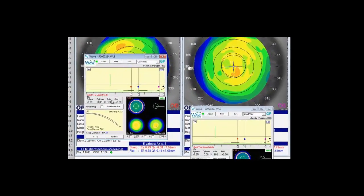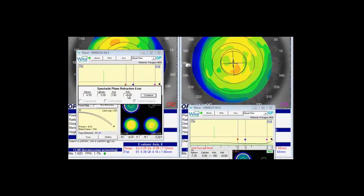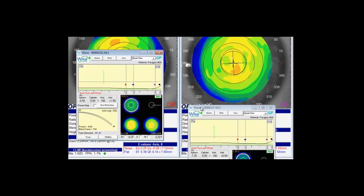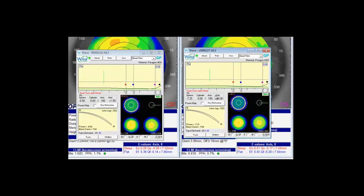And to incorporate a multifocal we simply click on the RX box and plug in the appropriate add power. So here I'll put in a plus 150 and I'll choose center distance. It's for the right eye and do the same exact thing for the left eye.